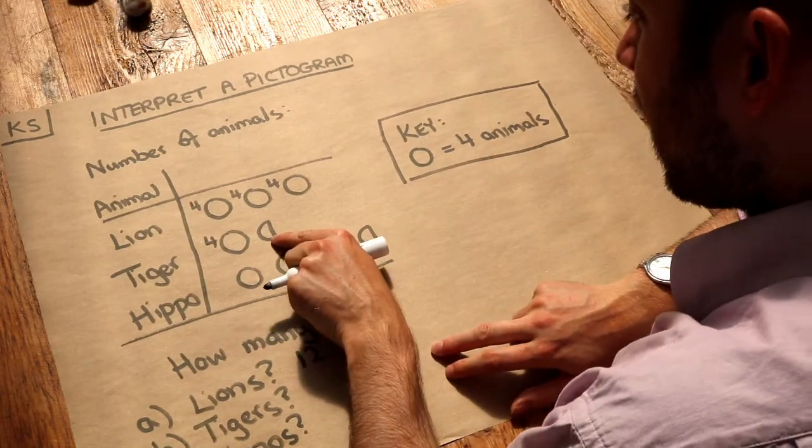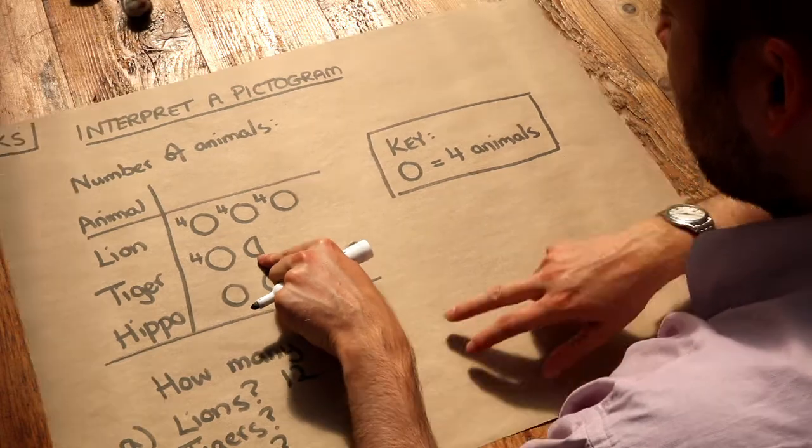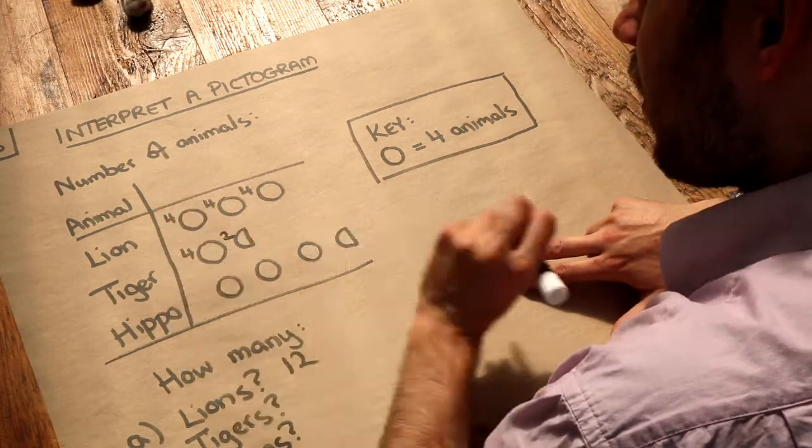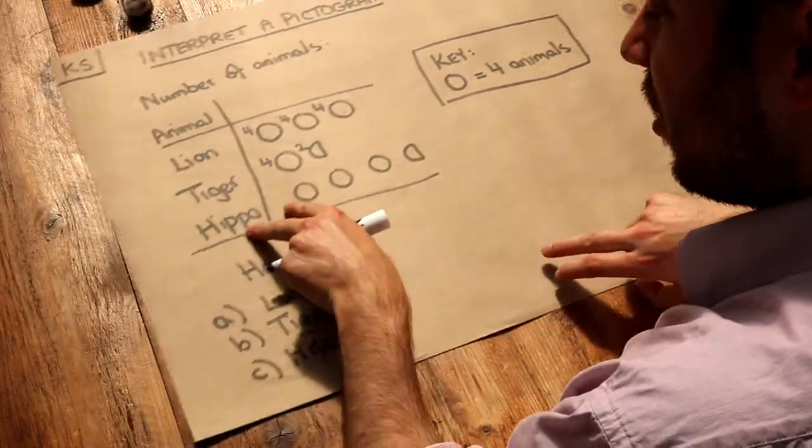And then what does this look like? Well, that looks like half a circle. So that means we have half of four animals. Half of four is two, so we've got four plus two, which is six tigers.